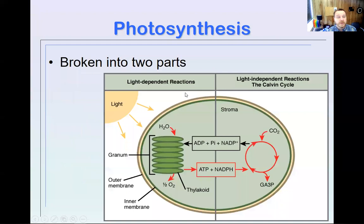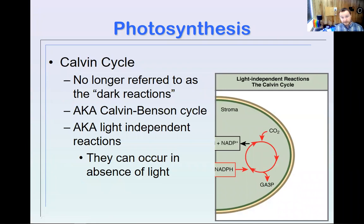Alright, so again, photosynthesis is broken into two parts. We've just talked about the light dependent reactions. We store energy from the light to generate ATP and NADPH. These are high energy molecules that we can then use to power a process we call the Calvin cycle.